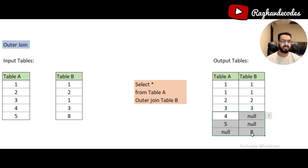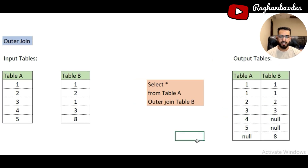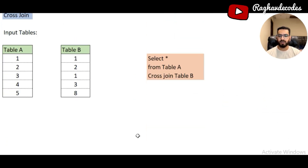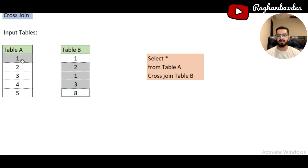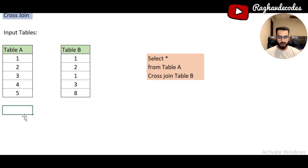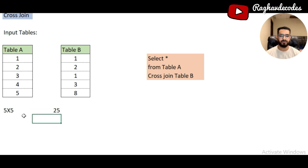The last part of the solution is a cross join. In cross join, a single row from Table A gets joined with all the rows from Table B. The output looks like: 1 joined with 1, then 1 with 2, then 1 with 3, then 1 with 8 — so that one row results in 5 rows. Then the next row also gets joined with all 5 rows, so the total output is going to be 5 cross 5, which is 25 rows.